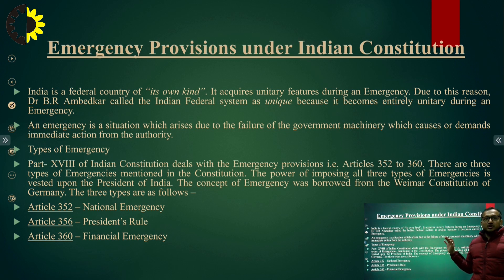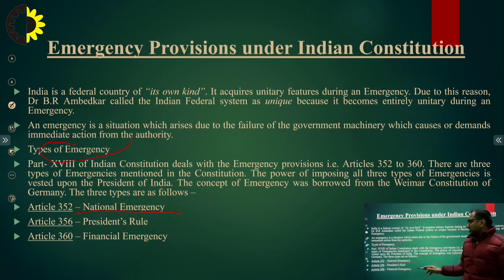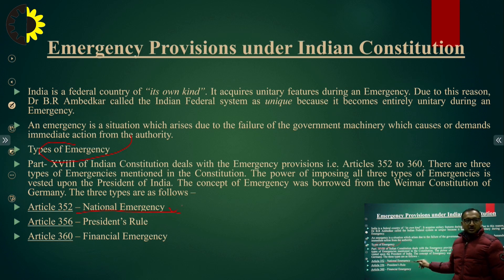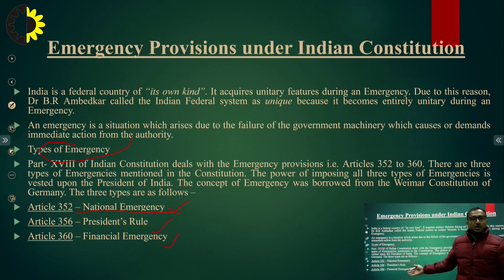Article 352 deals with the types of emergency. There are three types of emergency provisions in the Indian constitution. First is the national emergency — imposed when the country faces some kind of threat or danger. Second is the president's rule — imposed when there is anarchy in some state. Third is financial emergency — imposed when the country is going through difficult financial times.